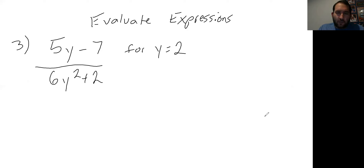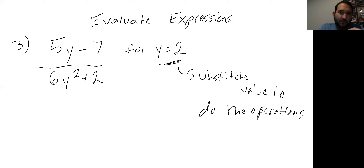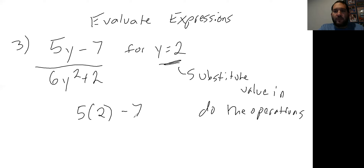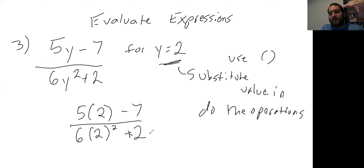What we're going to do is substitute whatever value y equals into the expression. Substitute — or you might hear 'plug it in.' Use parentheses when you substitute the value in; parentheses tell you to multiply and keep everything in line. So instead of y, we put 2 in parentheses: the top becomes 5 times (2) minus 7, and the bottom becomes 6 times (2) squared plus 2.